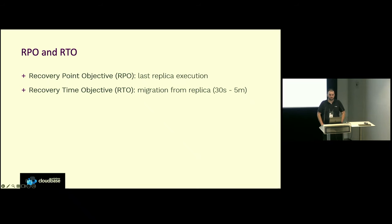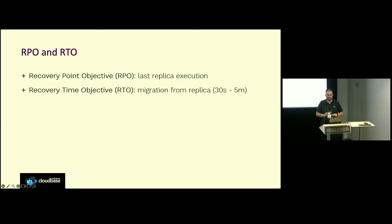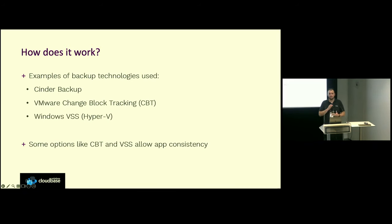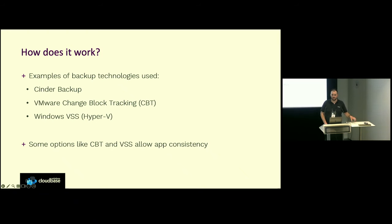There is also the recovery time objective — how much time is needed after a disaster to recover on the target cloud. This is basically dependent on the target platform, since you already have the volumes ready to be booted. It's typically from 30 seconds to 5 minutes for an instance to boot. The replica works by using the underlying backup technologies on the source cloud — in VMware we have change block tracking (CBT), which gives you app consistency, and in Windows with Hyper-V we have VSS, which is also app consistent. Replicas work while the VM is still running, and VMware allows that.